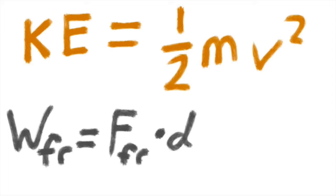The work due to friction is equal to the force due to friction dotted with the distance. That's a dot product, but since the angle is zero degrees, it reduces to the force of friction multiplied by the distance.